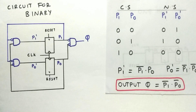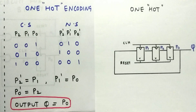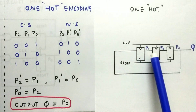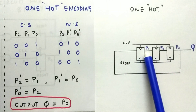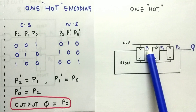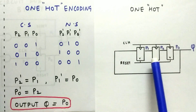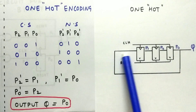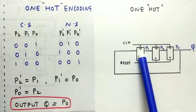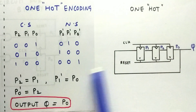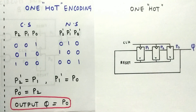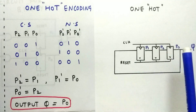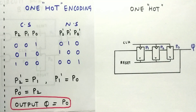Now let's look at one-hot encoding. This is the circuit for one-hot encoding. P2-, which is the input for the first flop, is coming from the output of the first flop P1. P1 equals P2-, and P0 is the output of that flop, which feeds back to P1-. P2 feeds into P0-. So this is the complete circuit for one-hot encoding.